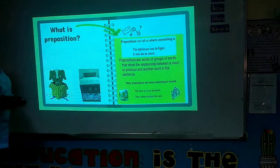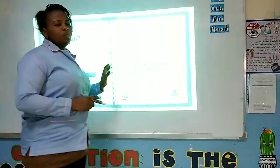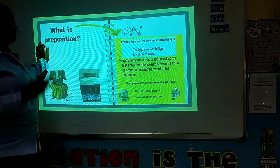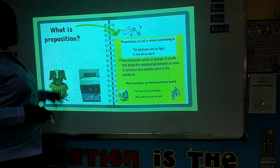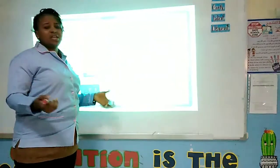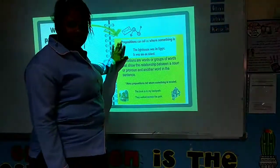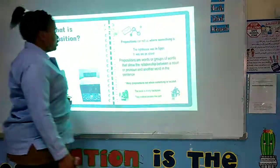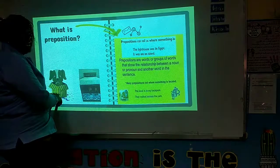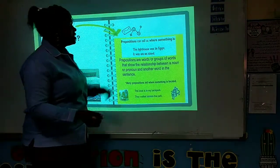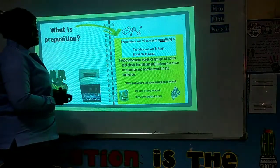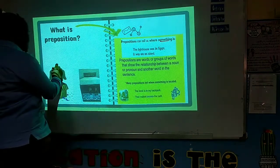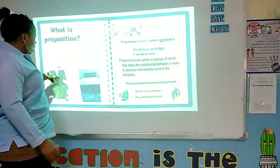Here we have our lesson proper. Pay attention so you understand very well. We are going to look at the meaning of preposition. Preposition can tell us where something is. This preposition is telling us that the dog is in the box. It tells us where something is. What is that something? The dog. Where is the dog? In the box. So the preposition there is the in. The dog is in the box.